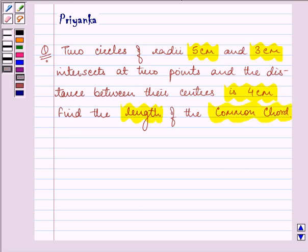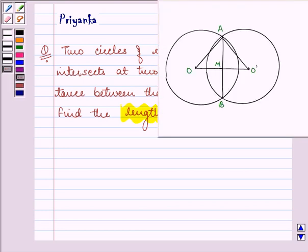So the diagram that will help us in finding out the solution is this. Here we are given that two circles are of radii 5 cm and 3 cm and the distance between them is given to us as 4 cm. What we need to find out is the length of this common chord.